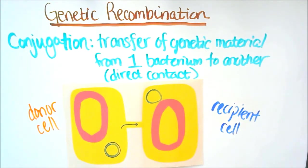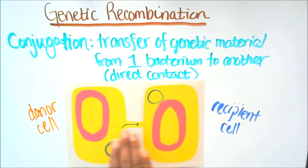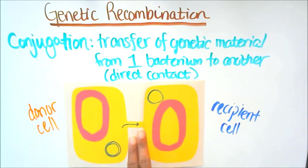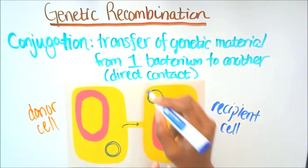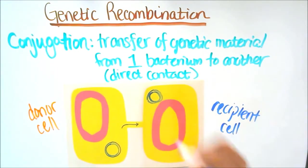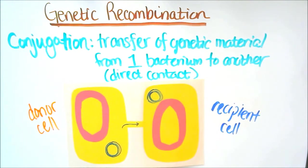Next up we have conjugation. Conjugation is the transfer of genetic material from one bacterium to another using direct contact. That direct contact is the pili — the donor cell extends its pili and attaches to the recipient cell. Once connected, one strand of the plasmid DNA is transferred to the recipient. The recipient then makes a complementary strand to become an F-plus cell, and the donor does the same, restoring its complete plasmid. This is conjugation.